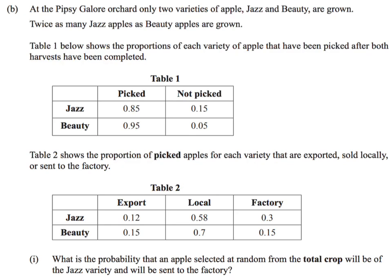It's talking about the orchard having two varieties of apples, jazz apples and beauty apples. They're telling us twice as many jazz apples as beauty apples are grown.